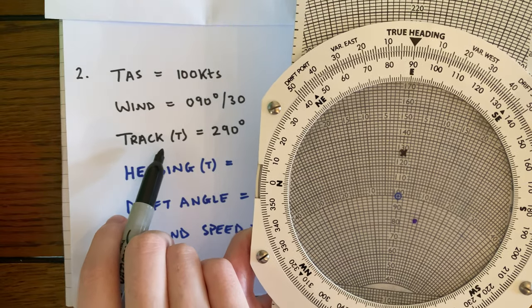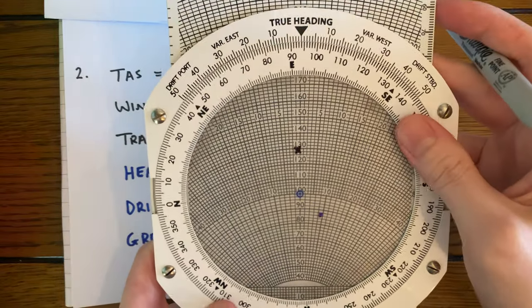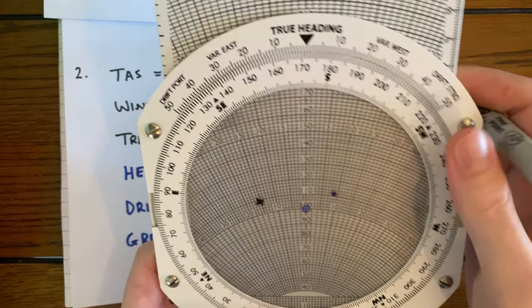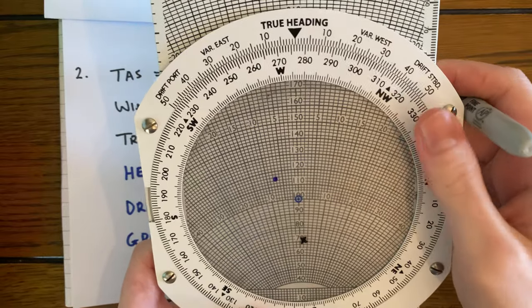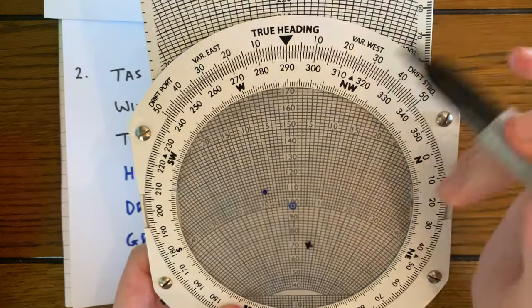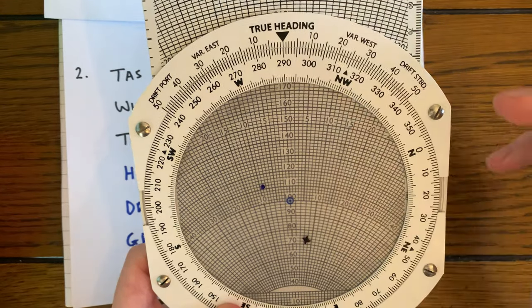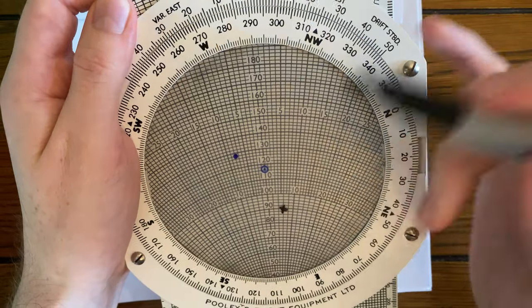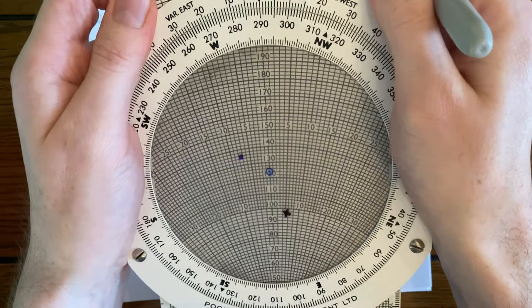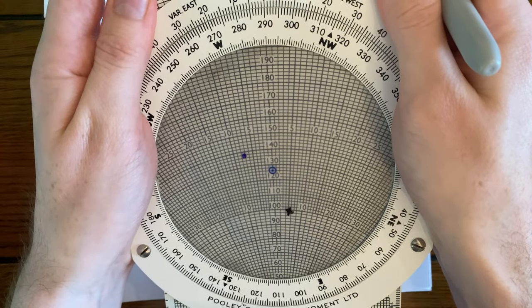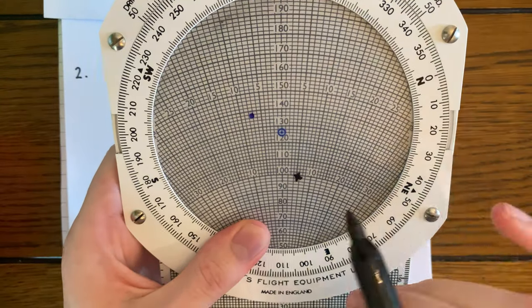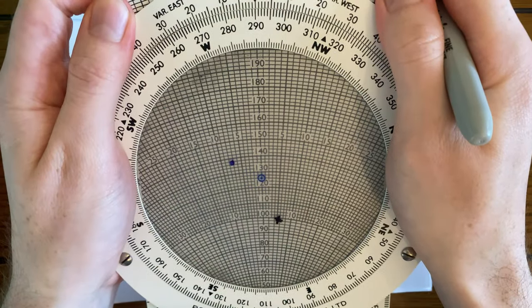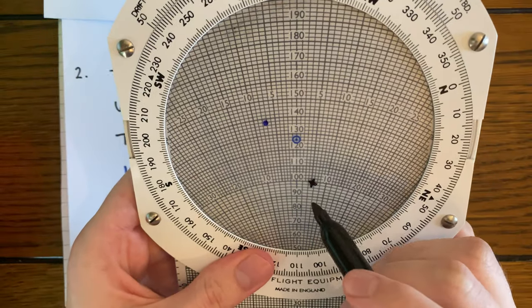Now our track is 290 degrees, so we're just going to spin around until we get round to 290 at the top. There it is. And we're going to adjust our slide rule to bring our black X here up to our original TAS line of 100 knots, which is about there. That looks pretty good to me.